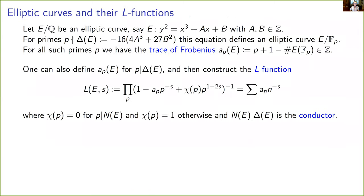Like all good number theory stories, the story begins with an elliptic curve over Q. Just to make sure we're all on the same page, for the first part of this talk I'll be talking about elliptic curves over Q, which can be defined with the Weierstrass equation Y² = X³ + AX + B, where A and B are integers. We can reduce this equation modulo a prime P — as long as it doesn't divide the discriminant of the cubic — and for each such prime we get an elliptic curve over a finite field. We can then compute the trace of Frobenius, A_P, at that prime, defined as P + 1 minus the number of F_P rational points on our curve.